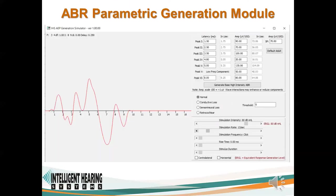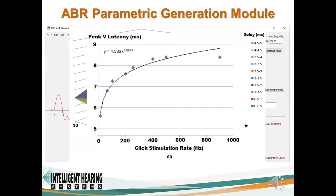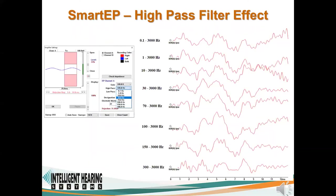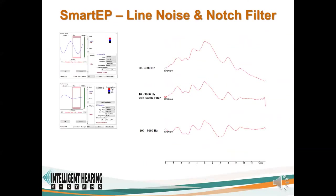Parametric data from the literature have been used to generate functions to model the effects of various recording parameters on ABR morphology. The effect of intensity and frequency on ABR latency are represented by this response latency surface. Other parameters such as stimulation rate, stimulation rise time, and others have also been incorporated into the ABR generation model. Students can see the effects of various high-pass filter settings, low-pass filter settings, the effect of line noise, and the notch filter.